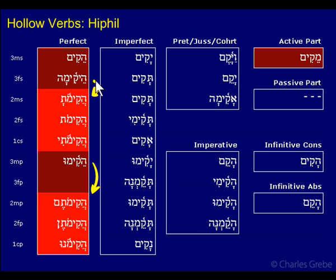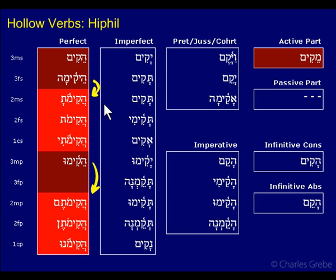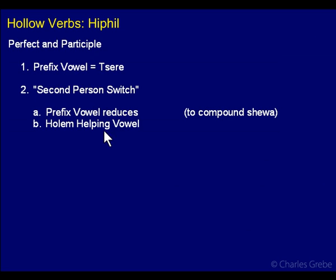We have tzere for the prefix vowel, and a second-person switch. We don't have reduction of the theme vowel. What we have is the prefix vowel reducing to the compound sheva — that's tzere to hataf-patah — and the holem helping vowel.